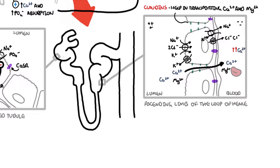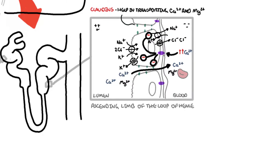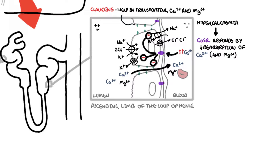When someone has hypercalcemia, this normally tells the parathyroid gland to stop producing parathyroid hormone. But also, hypercalcemia is detected by calcium sensing receptors in the kidneys, which results in a number of things: it inhibits sodium-potassium ATPase, inhibits the potassium efflux pump on the apical surface, and inhibits claudins. In summary, in hypercalcemia, calcium sensing receptors in the kidneys respond by reducing the reabsorption of calcium and magnesium, resulting in elevated calcium levels in urine — hypercalciuria — which helps the body transition back to normal calcemia.